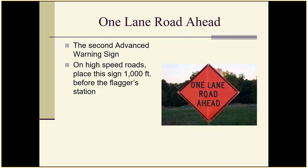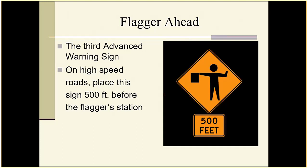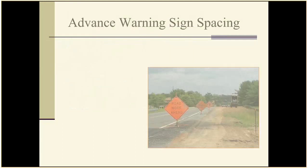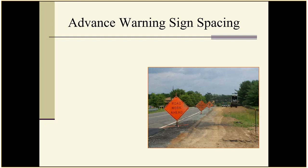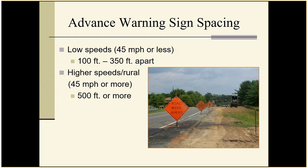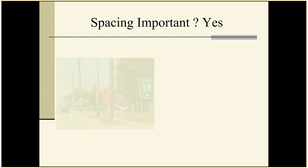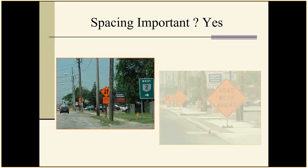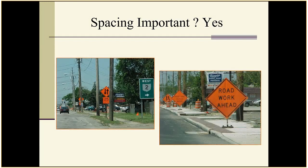The second sign is the One Lane Road Ahead sign, letting motorists know what the situation is ahead. The third sign is the Flagger Symbol sign — on high-speed two-lane rural roads, this is 500 feet in front of the flagger. Spacing is important because it gives motorists, at the speed they're traveling, time to read and comprehend each sign as they approach.